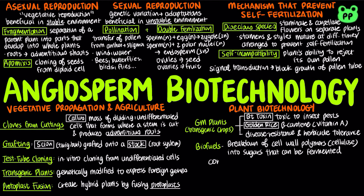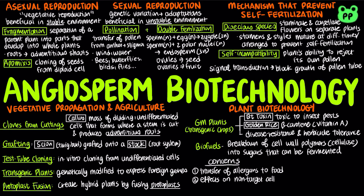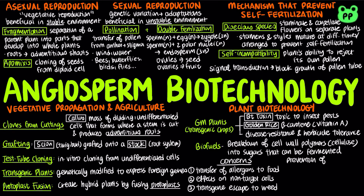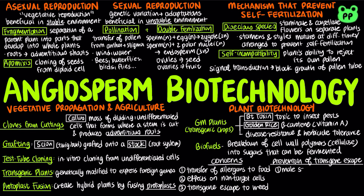There are some risks in releasing genetically modified organisms into the environment. First, genetic engineering may transfer allergens from a gene source to a plant used for food. Second, genetic engineering may have negative effects on non-target cells. The most serious concern is transgenic escape, which is the possibility of introduced genes escaping into related weeds through crop-to-weed hybridization. There are four main mechanisms to prevent transgenic escape: making the plant male sterile; apomixis, which is the cloning of seeds from the diploid cell; engineering transgenes into the chloroplast DNA so they are not transferred by pollen; and strict self-pollination.